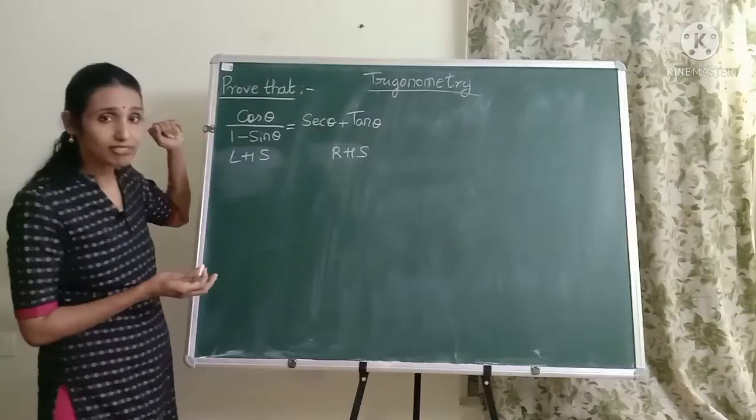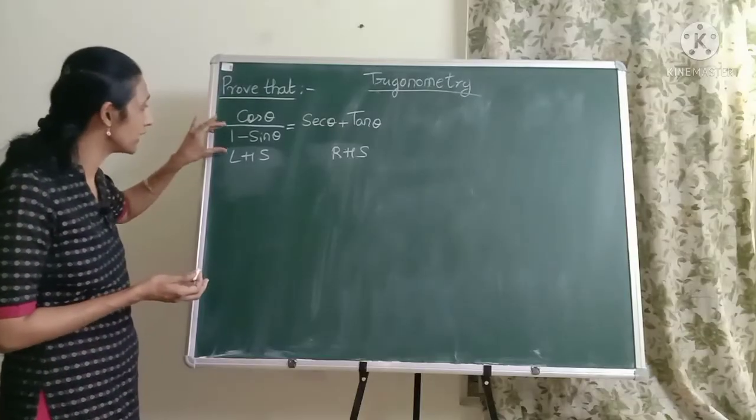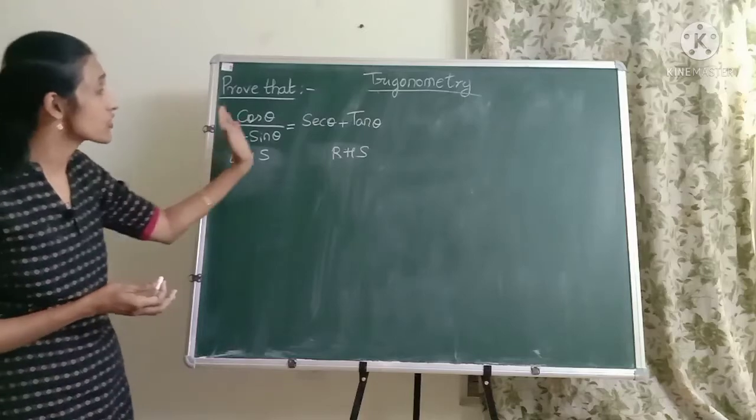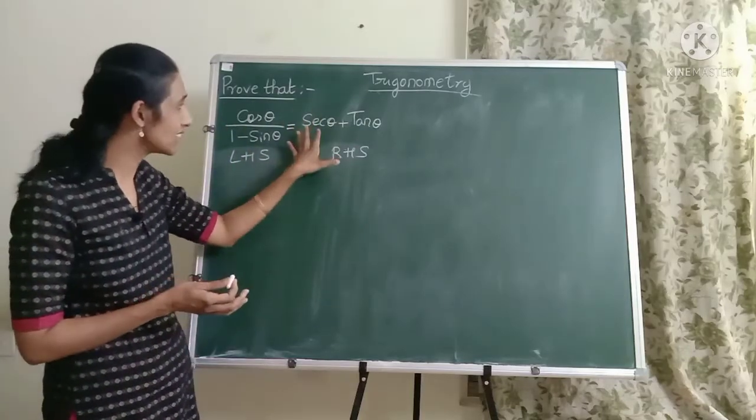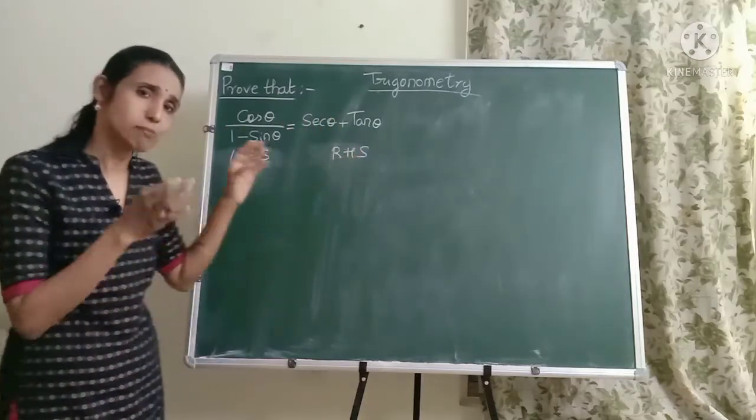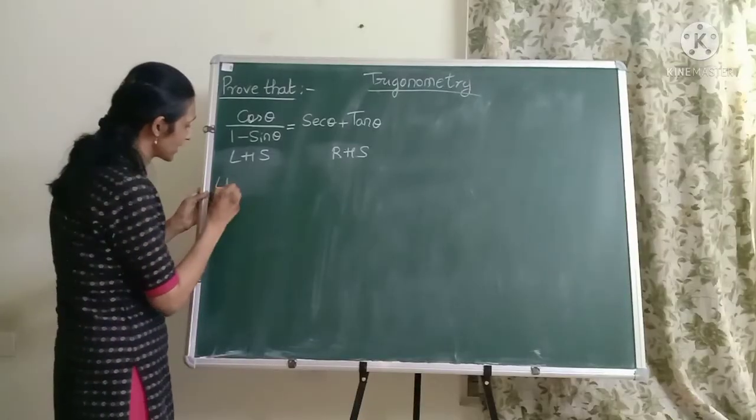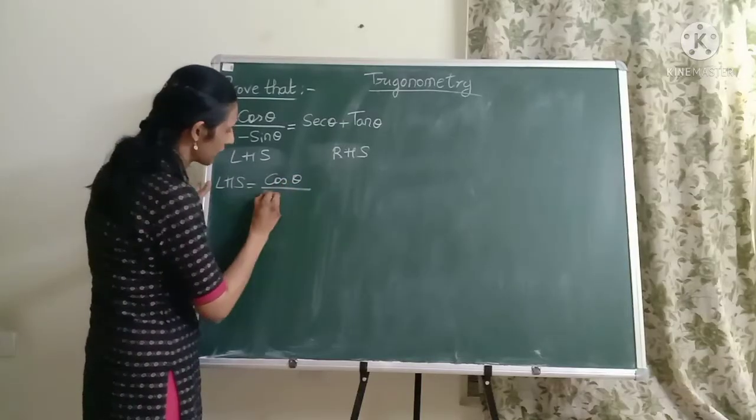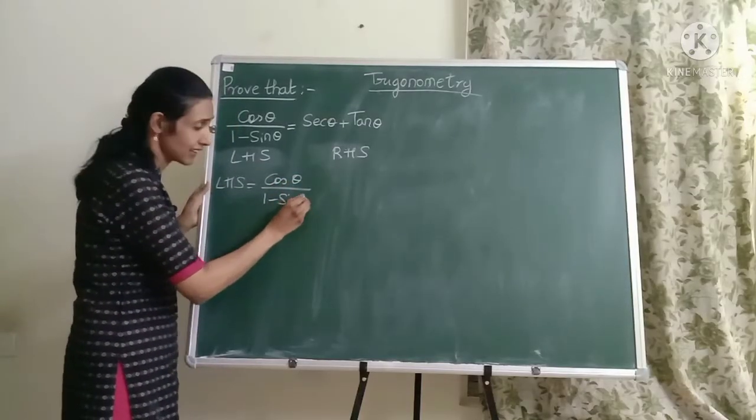Definitely you can see that left hand side has cos, it has 1, minus is there, division is there, sin theta is there. Whereas on the right hand side you just have sec theta plus tan theta. So it's better that we start with the LHS. So let us write that down. LHS is equal to cos theta divided by 1 minus sin theta.